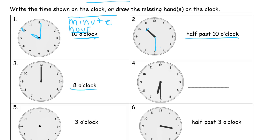8 o'clock — we already have our minute hand. You can tell it's the minute hand because it's touching the number 12. Now we need to point our hour hand to the 8. Sometimes it's easier to start where you want it to end and draw it back to the middle — that's an easier way to get it straight and make sure it doesn't end up being too long.